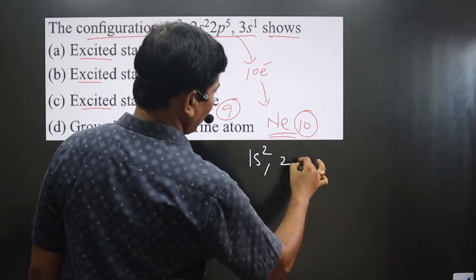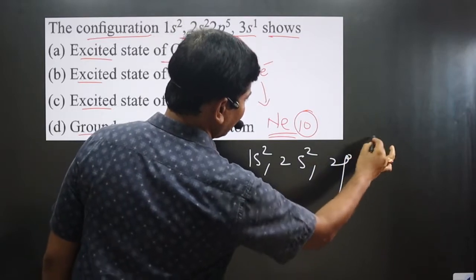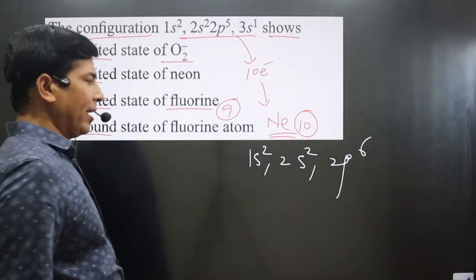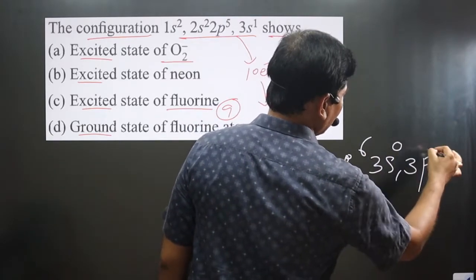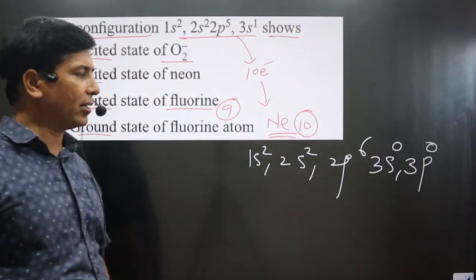We have 1s² 2s² 2p⁶. On the other side we have 3s empty orbitals - electrons are not present there in the ground state.